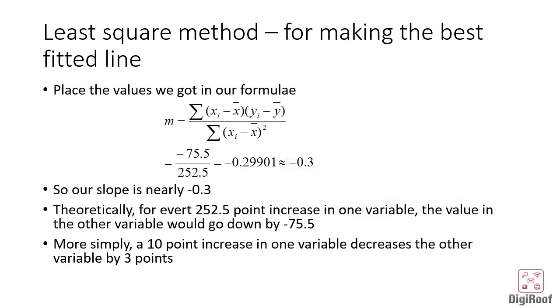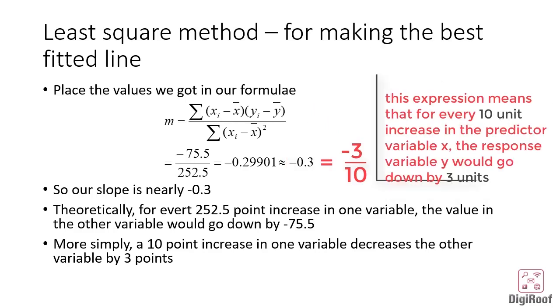Also note that if we rewrite the slope value minus 0.3 as minus 3 by 10, it would mean that for every 10 point increase in the predictor variable, the response variable would go down by minus 3 points.